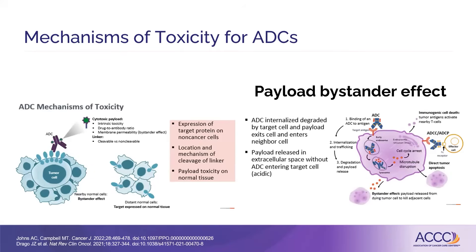So why do these toxicities occur? Often we think about antibody drug conjugates as being a targeted therapy, so we think of targeted therapies as having less toxicity. But in reality, even though that antibody drug conjugate is targeting a receptor — it is a monoclonal antibody that will target a receptor on the cancer cell — it carries with it that cytotoxic payload. That's the conjugate of the drug, and that's what makes it hopefully an effective medication, because it can enter the cell through that target using the linker, and then that cytotoxic payload is released and hopefully kills that cancer cell.